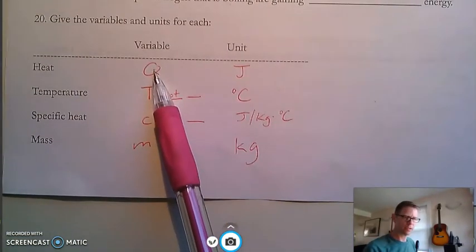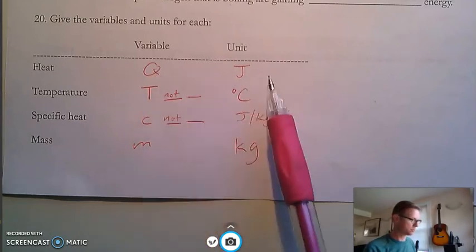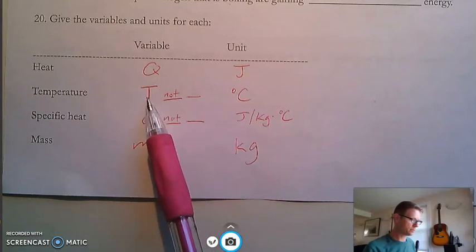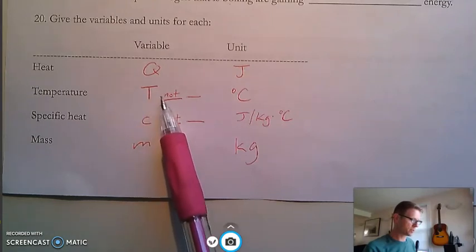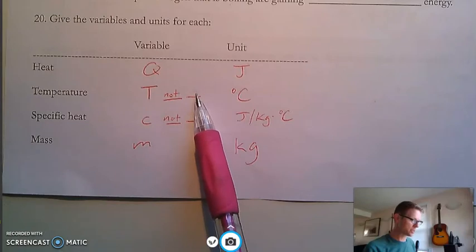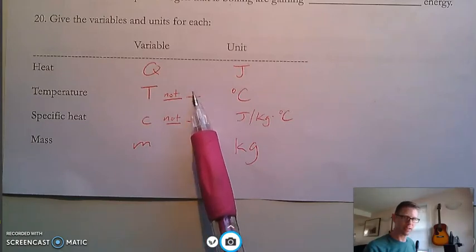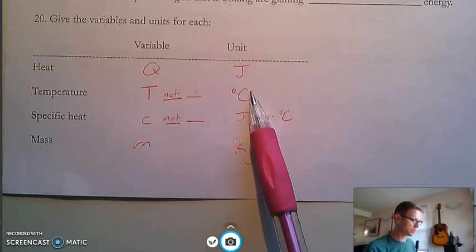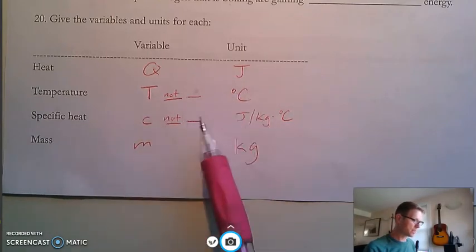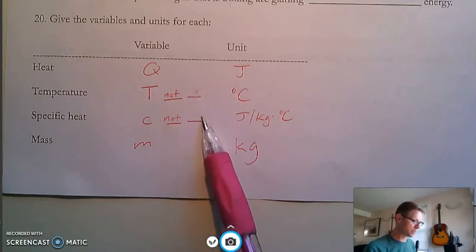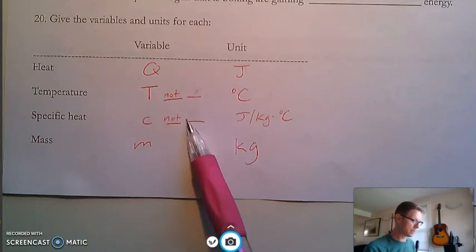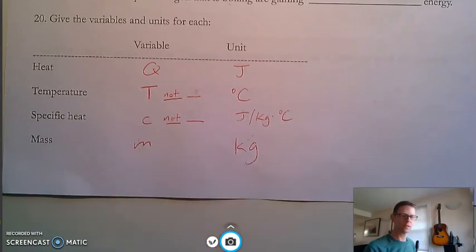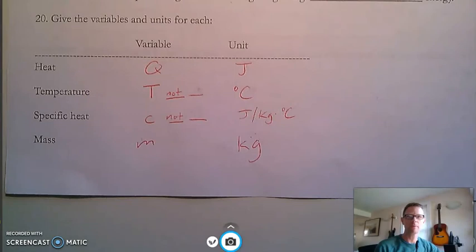Heat. Variable is the number that goes into an equation. Unit is the label. Temperature. Variable goes into the equation. It's not a lowercase t. Not a lowercase t. Not a lowercase t. Degrees Celsius, capital C. Specific heat, lowercase c. See the difference? Not capital C. Not degrees Celsius. That's nothing to do with joules per kilogram degree Celsius. Mass we've been doing since September.